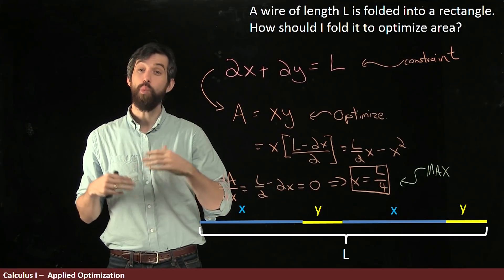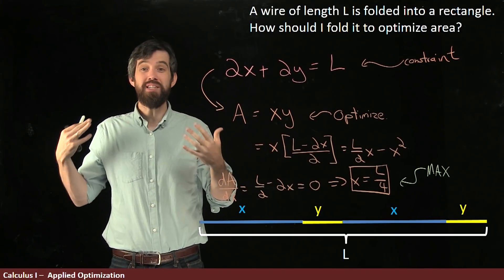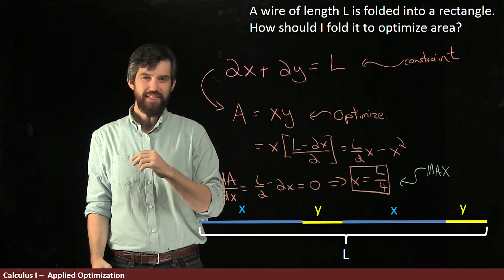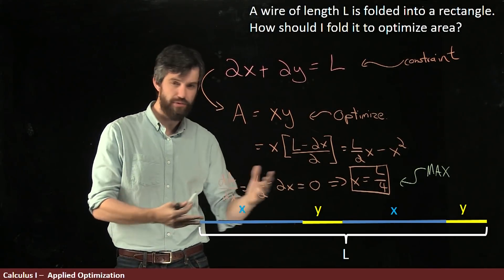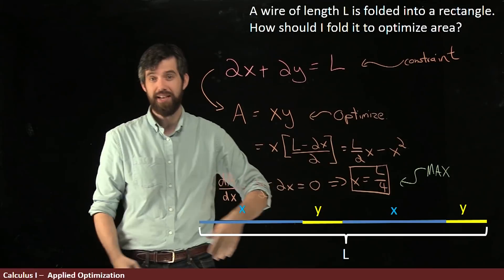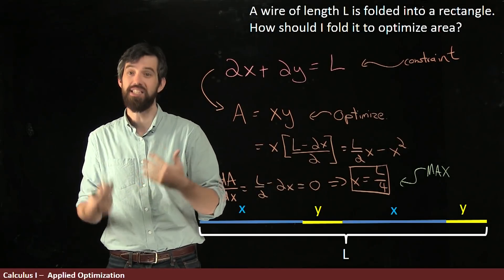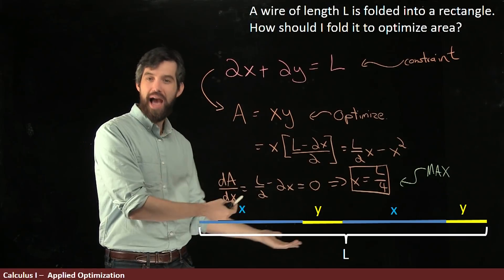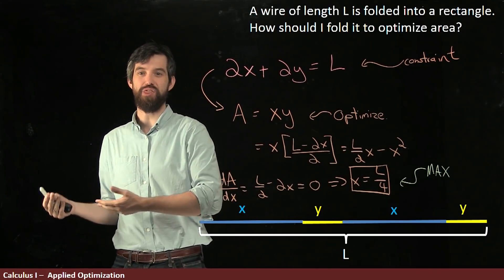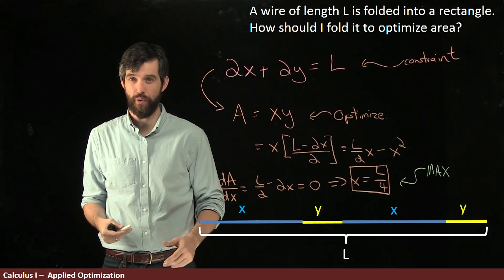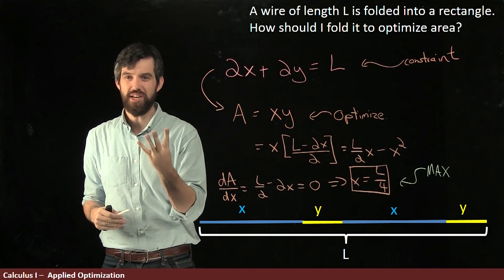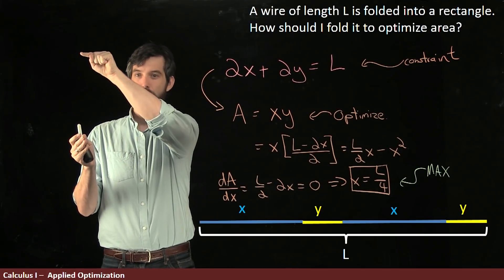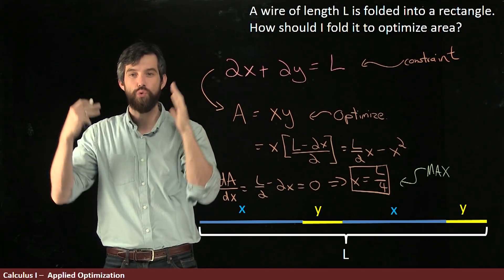The final thing to consider is what happens geometrically. If X = L/4 and there are two X portions, they take up L/2 of the wire. The two Y portions take up the other half, which forces Y = L/4 as well. So there are four line segments each of length L/4 — it is a square.